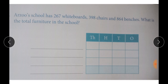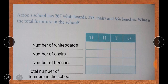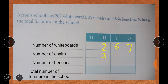How do we write the statements? First, we write the number of whiteboards. It's given as 267. We write this in the table according to its place values. Where do we write 267? We write 2 in the hundreds column, 6 in the tens column, and 7 in the ones column. The same way, how many chairs are in the school? It's given as 398. So number of chairs: we write 3 in hundreds, 9 in tens, and 8 in ones.